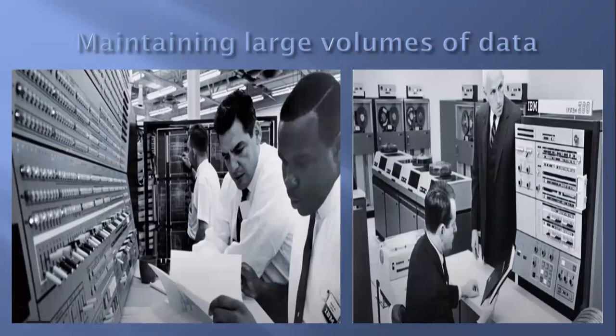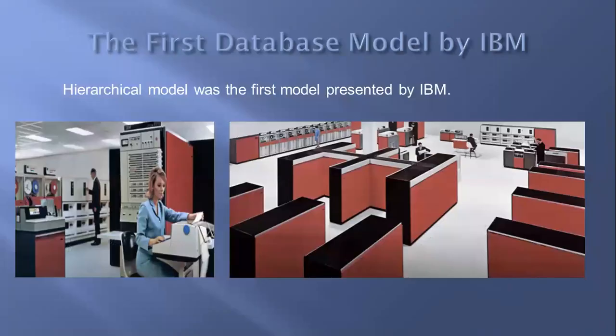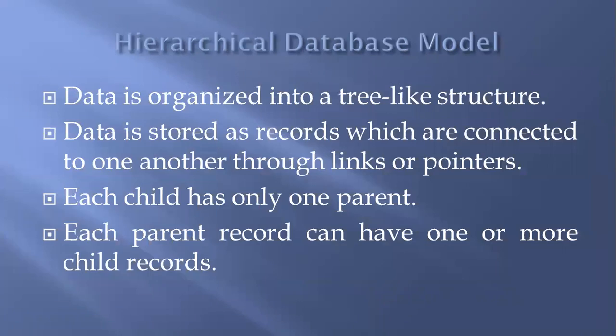So new faster databases were needed that were expandable, reliable, and efficient. In the mid-1960s, International Business Machines IBM used a hierarchical model for their Information Management System IMS, which was successfully used by NASA to manage drawings for the lunar lander.